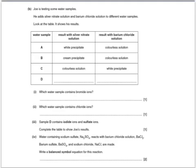Another exam question. Joe's testing some water samples. He adds silver nitrate and barium chloride to various different water samples, and look at the table. It shows the results. Which water sample contains bromide ions? Well, bromide ions give a cream precipitate with silver nitrate. Here's the cream precipitate, so that one would be B. Which one contains chloride ions? Again, silver nitrate, this time a white precipitate, so that one would be A. Sample D contains iodide ions and sulphate ions. Complete the table. Well, if it contains iodide ions, that would give us a yellow precipitate of silver iodide. And with barium chloride, we'd get a white precipitate of barium sulphate.